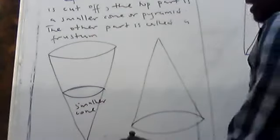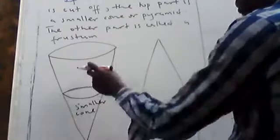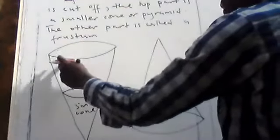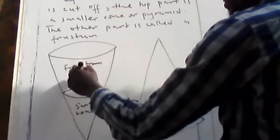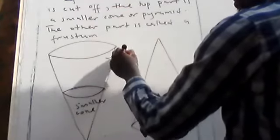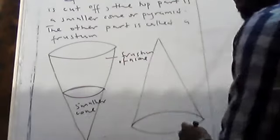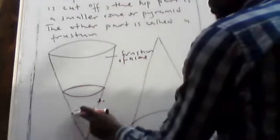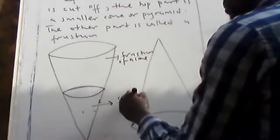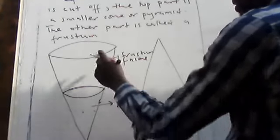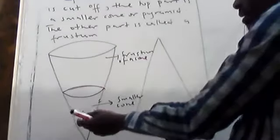Can you see? This smaller cone is on top, and from here to here is the bigger cone. The frustum of a cone is what remains. Whenever a cone is cut off, the top part is the smaller cone.